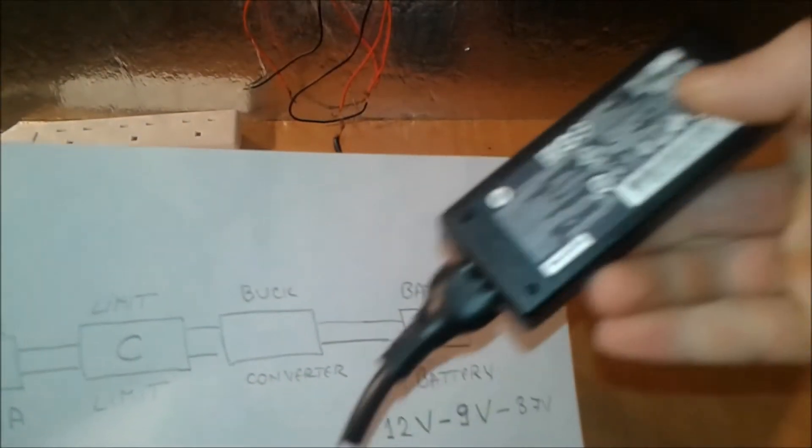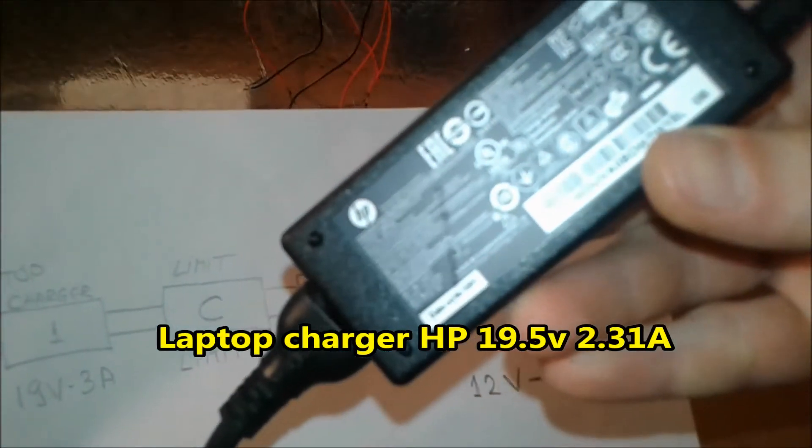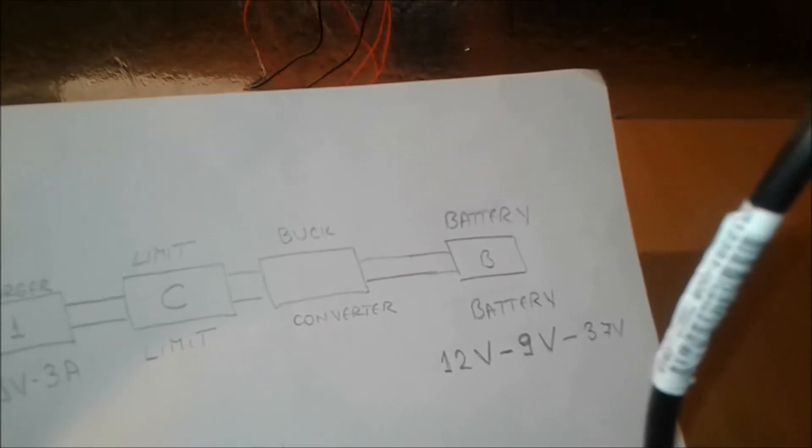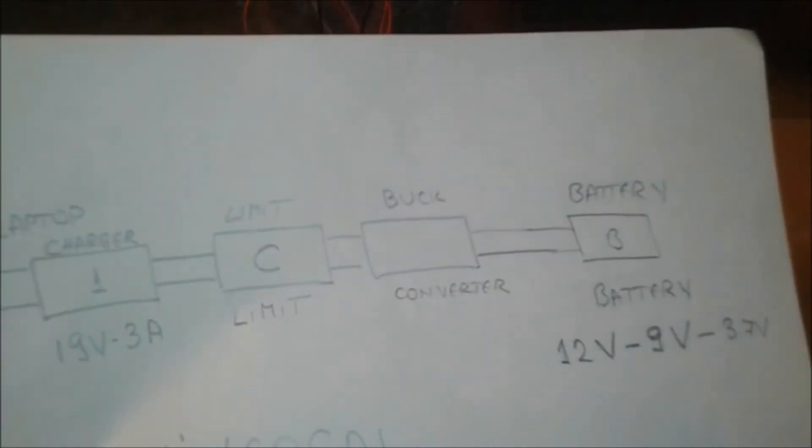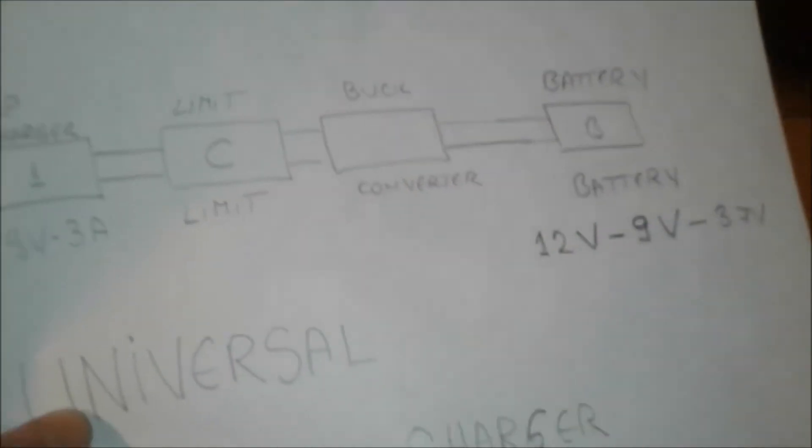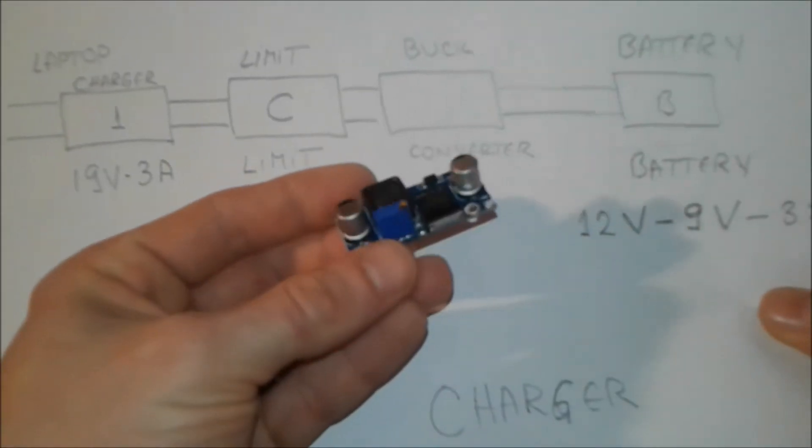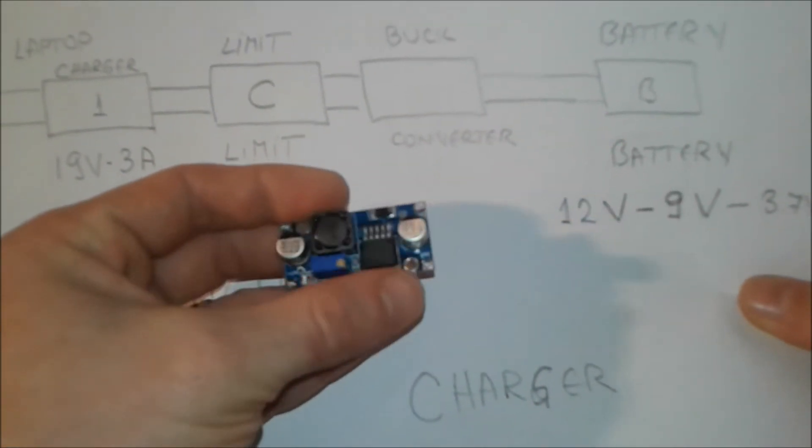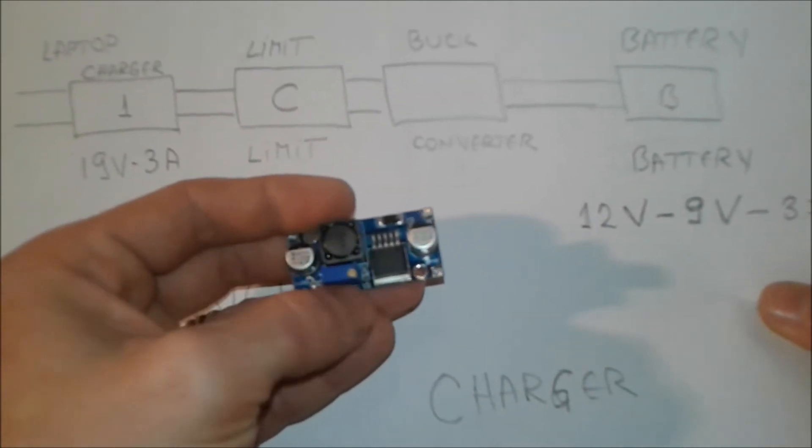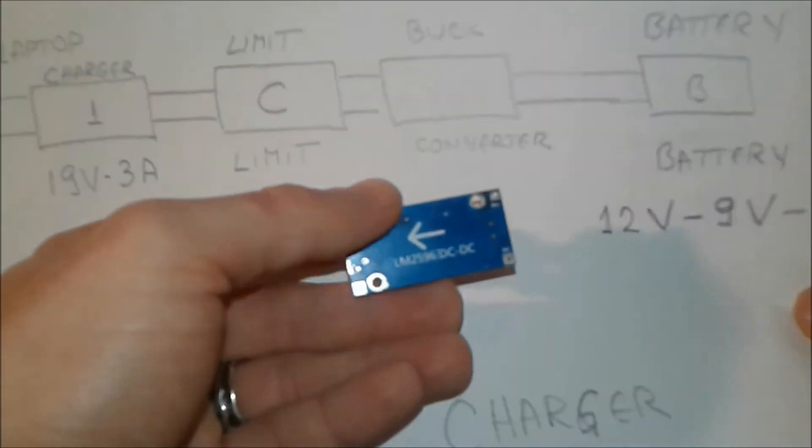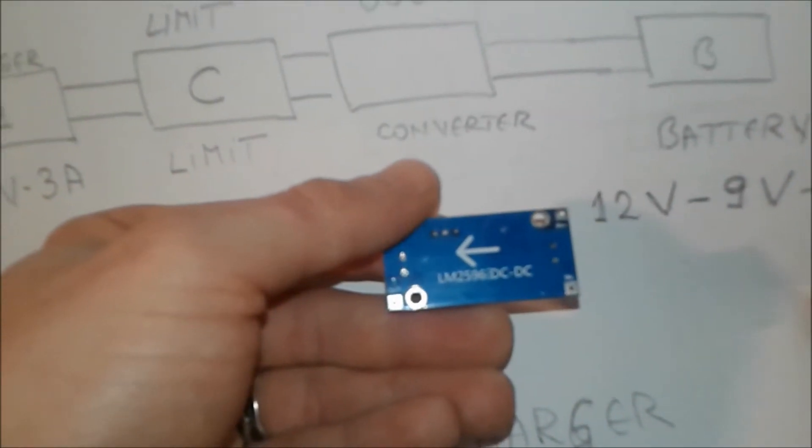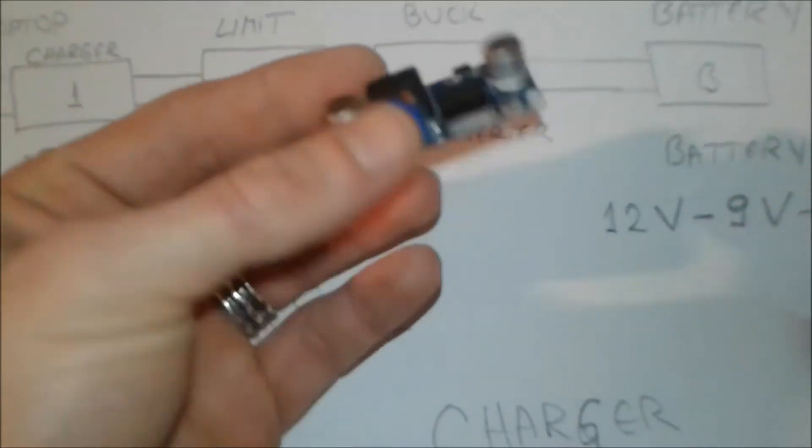We're gonna start straight away. This is the laptop charger - 9.5 volts and 2.31 amps. Laptop charger, check. Current limiter is next. Then the buck converter - normally it looks like this with voltage adjustment here, or you can buy fancier ones with current adjustment. This uses the LM2596 chip. Here's the input and output, plus and minus.